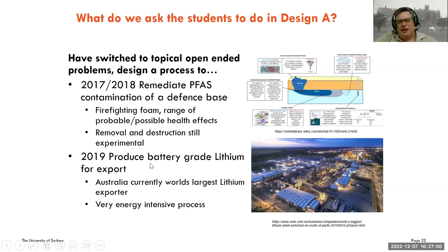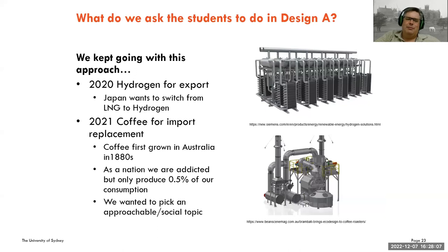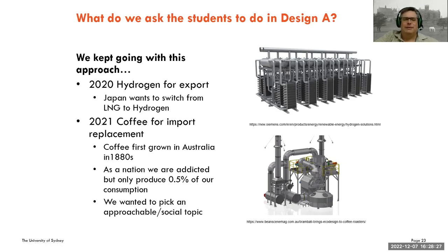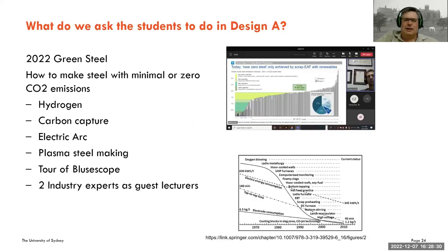Most people don't realize that Australia is the world's biggest lithium exporter, and it's probably 50/50 whether the lithium in your phone or computer has come from Australia. More recently we've looked at hydrogen for export — Caroline mentioned it's a big growing industry — and coffee for import replacement, since coffee processing is another potential chemical engineering area. In all of these we get industry experts involved in helping us scope the project and giving students some input during the semester.